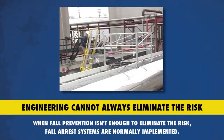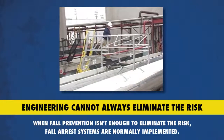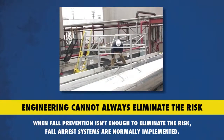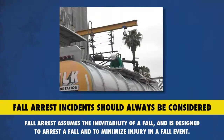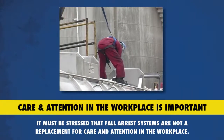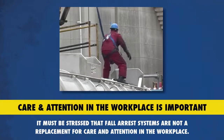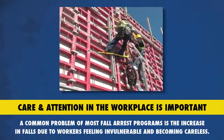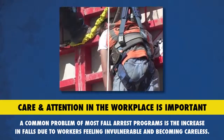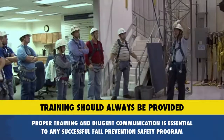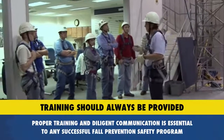While fall prevention protects the worker by eliminating the possibility of a fall, it is recognized that engineering cannot always eliminate the risk of a fall. In such instances, fall arrest systems are normally implemented. Unlike fall prevention, fall arrest assumes the inevitability of a fall and is designed to arrest a fall and to minimize injury in a fall event. Even with this assumption, it must be stressed that fall arrest systems are not a replacement for care and attention in the workplace. A common problem experienced during the early stages of a fall arrest program is the increase in falls due to workers feeling invulnerable and becoming careless. This can often be dealt with through proper training and diligent communication.